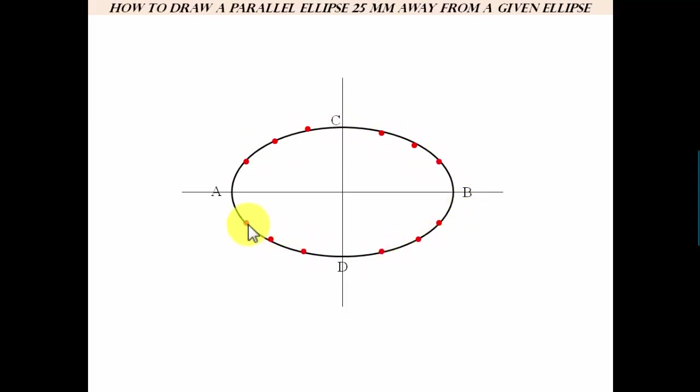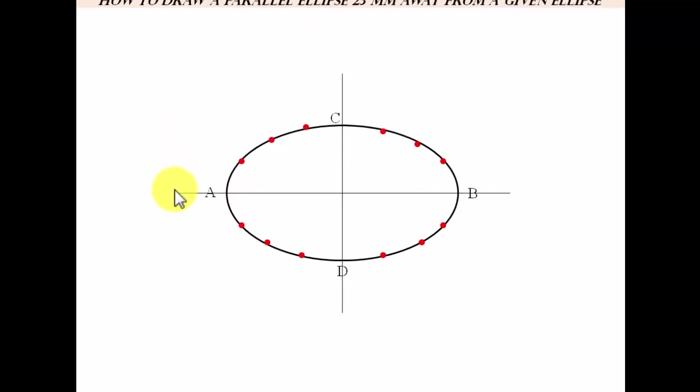Now with 25mm as the radius in your compass or rounder, what you need to do is take this as the center and put an arc.